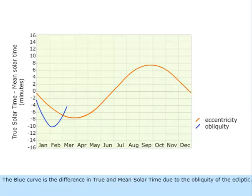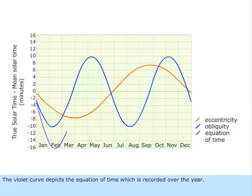The blue curve is the difference in true and mean solar time due to the obliquity of the ecliptic. The violet curve depicts the equation of time which is recorded over the year.